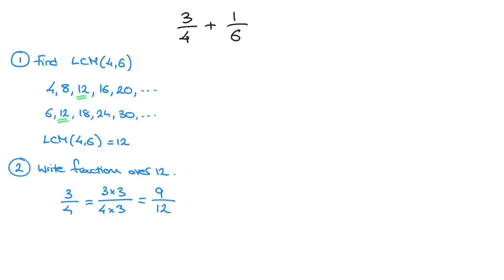We do the same thing for 1 over 6. We look back at our list of multiples and notice that 12 is the 2nd multiple of 6. So to change this into a fraction over 12, we multiply 6 by 2 on the denominator, and therefore we multiply the numerator by 2 as well — that's 1 times 2. So we can state that 1 over 6 equals 2 over 12. And that's step 2 done.